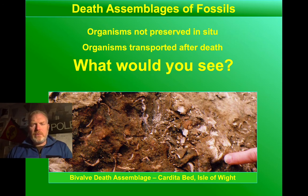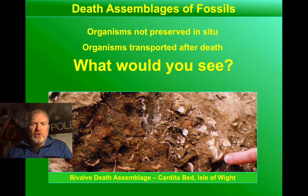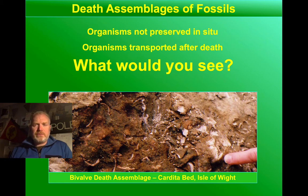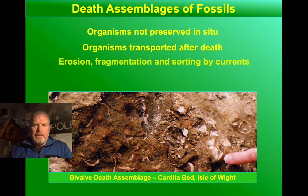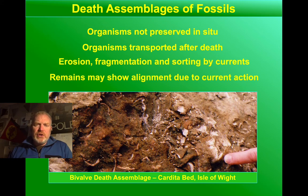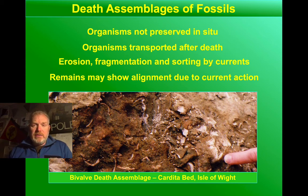The second type of assemblage we can find is what we call a death assemblage. This is where fossils aren't preserved in the place where they lived — they've been transported after death. What do you think that would look like? What would you see if you were looking at a death assemblage of fossils? We would see that the fossils in that assemblage are eroded, perhaps broken down, perhaps sorted out by size or shape. Those fossils might also be aligned — if there's a flow transporting those fossils, it can align them parallel to the flow.